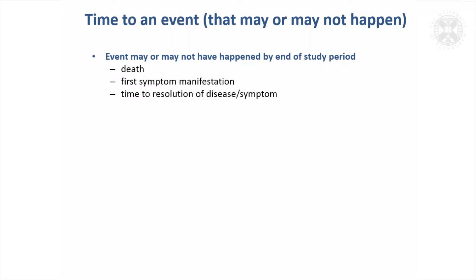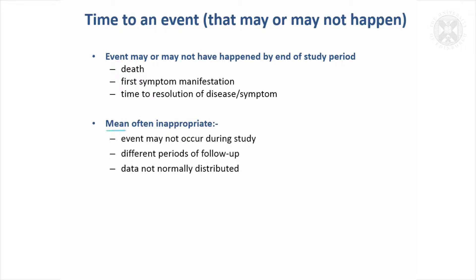The last type of data I'd like to mention is time to an event, when you're in a situation where an event may or may not happen — something like death, time to the first symptom of a disease, time to resolution of a disease. You've got a fixed time period and it may or may not have happened by the end of that period. The mean won't be appropriate because the event may not have happened, you might have different periods of follow-up, and the data might not be normally distributed.